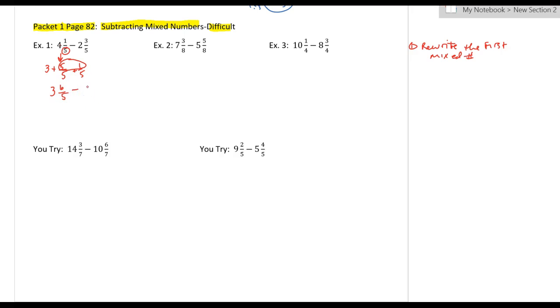Now I can subtract two and three-fifths. So now, all I do, I subtract the whole numbers, three minus two is one, then I subtract the fractions. Six minus three is three over five, and we are done.